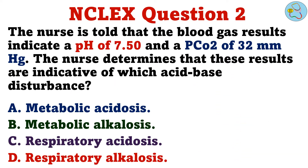Question 2. The nurse is told that the blood gas results indicate a pH of 7.50 and a PCO2 of 32 millimeters of mercury. The nurse determines that these results are indicative of which acid-base disturbance? A. Metabolic acidosis. B. Metabolic alkalosis. C. Respiratory acidosis. D. Respiratory alkalosis.